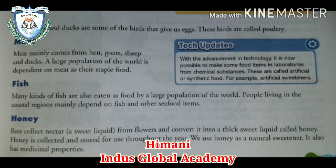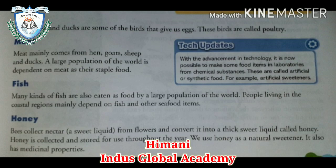A large population depends on meat. Then fish. Many kinds of fish are also eaten as food by a large population. Then honey. Bees collect nectar, which is a sweet liquid from flowers, and convert it into a thick sweet liquid called honey. Honey is collected and stored for use throughout the year. We use honey as a natural sweetener, and it also has some medicinal properties.